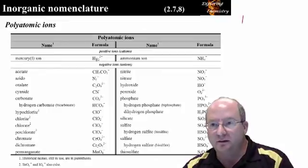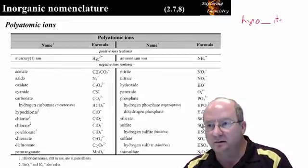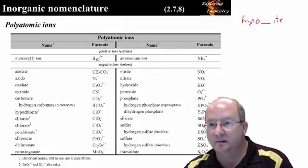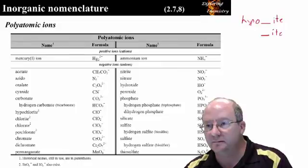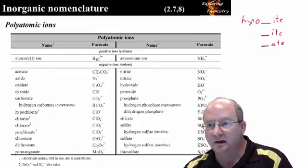We start with hypo blank ITE. Then it is blank ITE. Then it is blank ATE. And then we have per blank ATE.